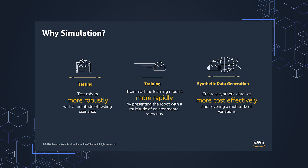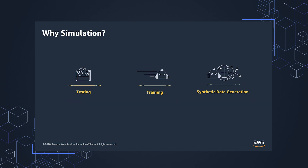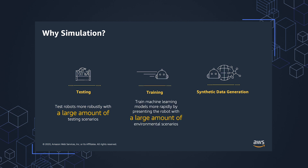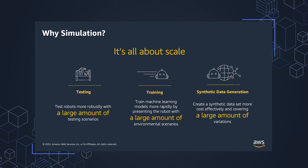We've seen our customers consistently use simulation for these use cases. However, with simulation in these scenarios, you will require a large amount of variation in the simulation worlds for this to be effective. For testing, you need a large number of environments, objects, scenarios, and variation in parameters so that your robot is being tested more robustly. For machine learning training and synthetic data generation, having large variation in worlds and the ability to change parameters is required to create the rich dataset needed to train your models. With a large number of worlds, the cost per image for synthetic or labeled data is significantly lower than manual human labeling. It's all about scale.